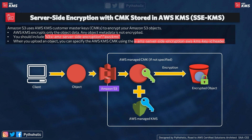The second type is server-side encryption with customer master keys stored in AWS Key Management Service — SSE-KMS. When you use SSE-KMS, you can use the default AWS managed CMK or specify a customer managed CMK you already created. If you don't specify one, S3 automatically creates an AWS managed CMK in your account. Every object sent to S3 is encrypted using the AWS managed KMS key and stored as an encrypted object on S3.